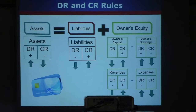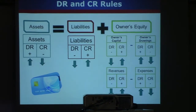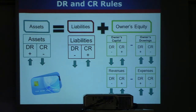And for equities, they are broken up into four categories. You've got the owner's capital, where credits go up, debits go down. You've got the owner's drawings, where debits go up, credits go down. And then you have revenues and expenses. In revenues, credits go up, debits go down. Expenses, debits go up, credits go down.